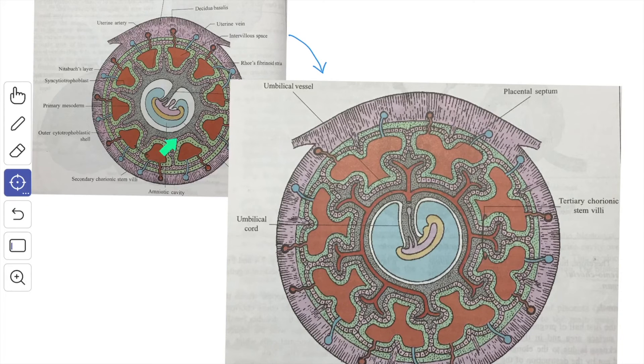The secondary villae is converted into tertiary villae when the fetal blood vessels derived from the umbilical vessel appear within the primary mesoderm. Therefore, all the tertiary villae are vascular. From each tertiary villus, numerous branching villae they project into the inter villus space converting the inter villus space into labyrinthine structure.